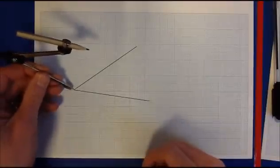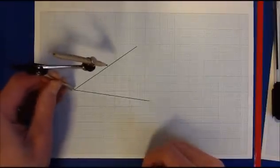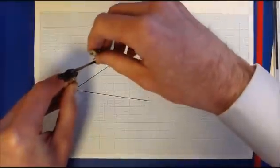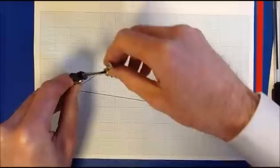Put your compass point on the corner of the angle and draw an arc which goes through both lines. It doesn't really matter what size the compass is, but this will do nicely.